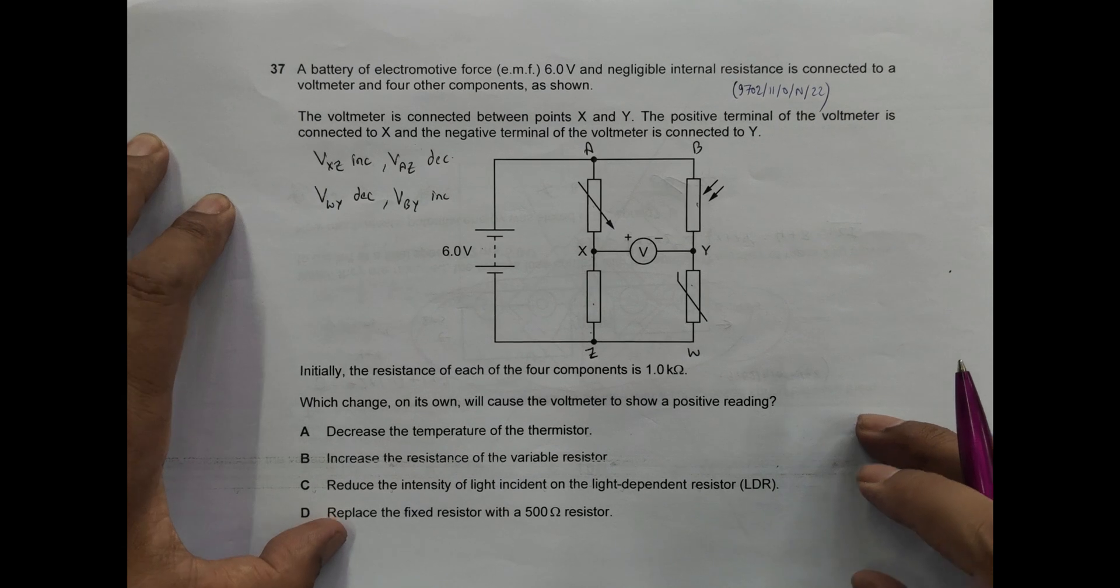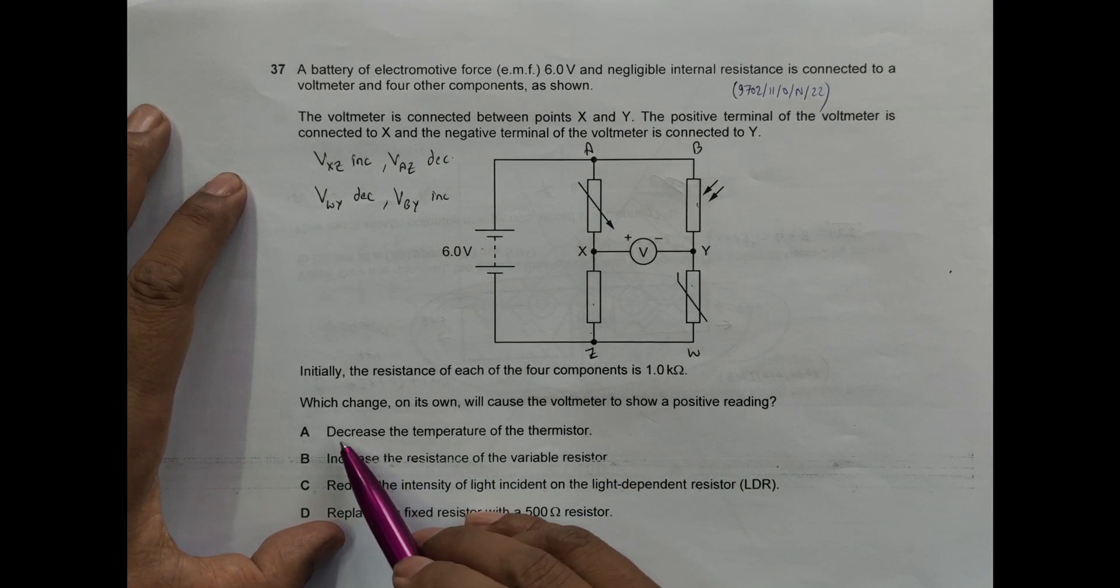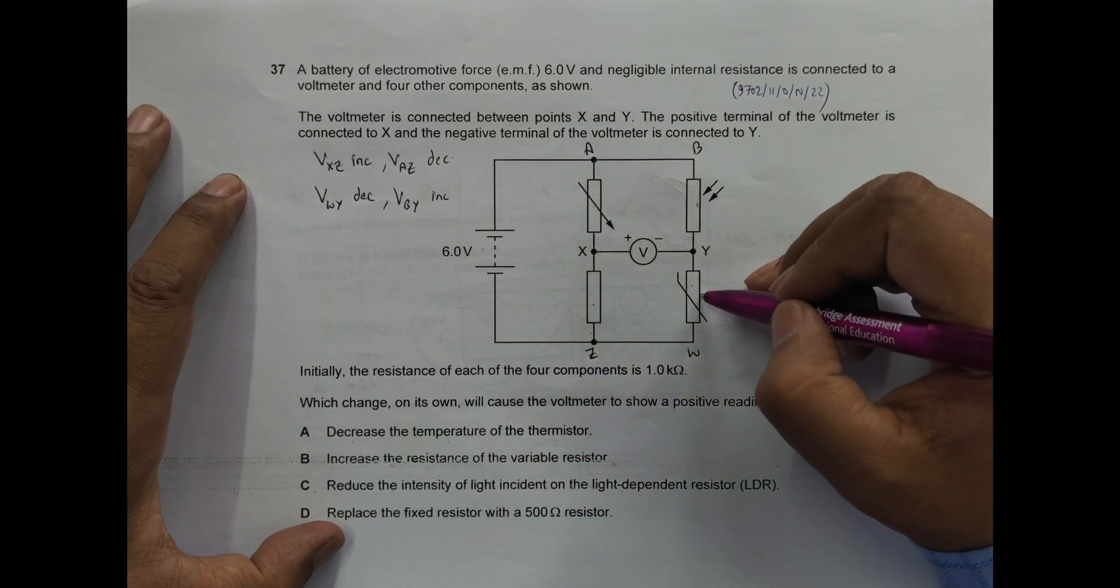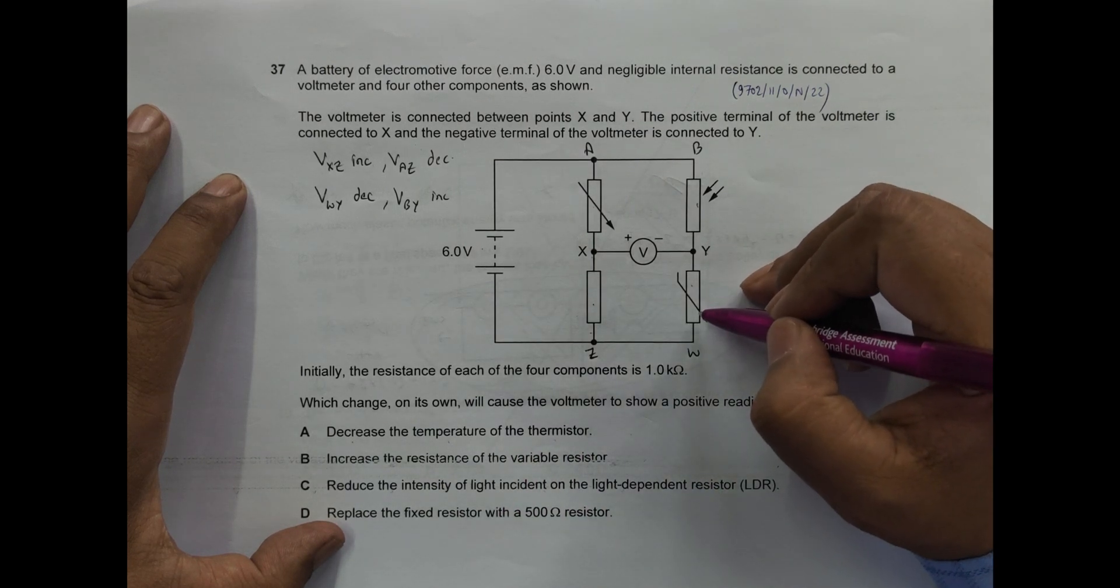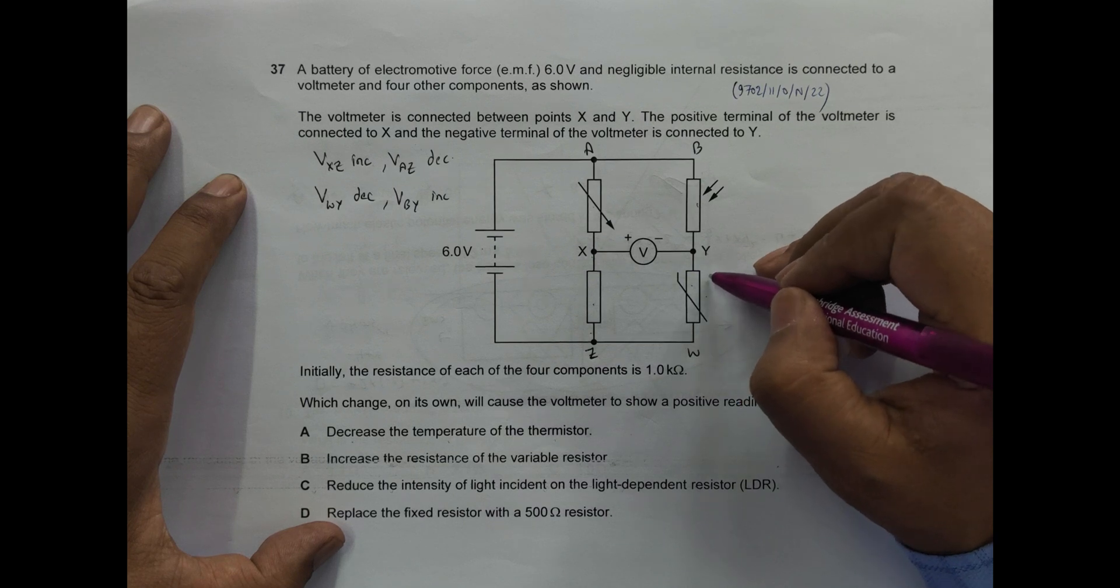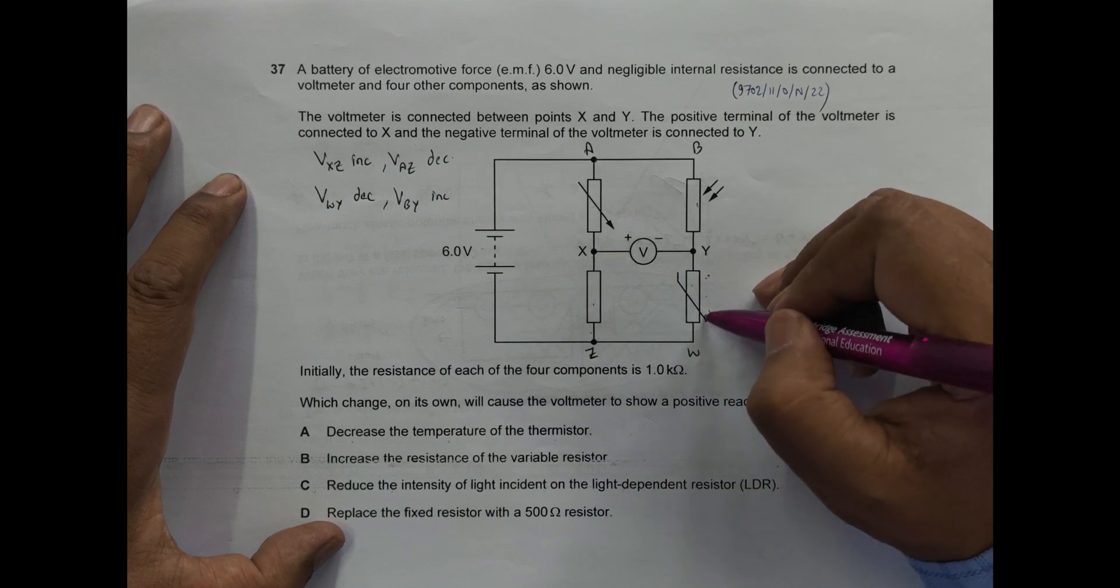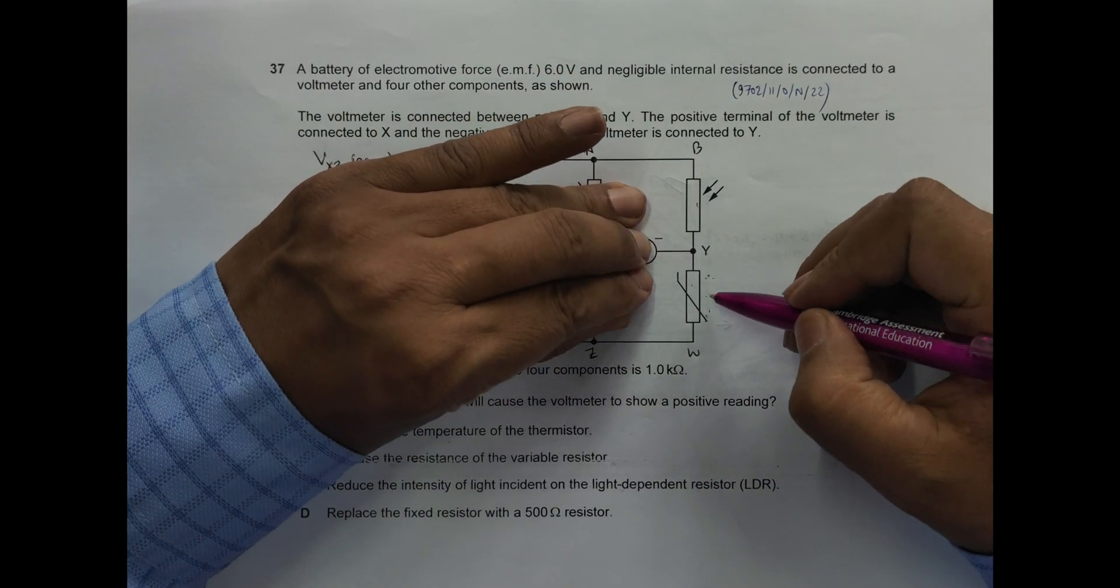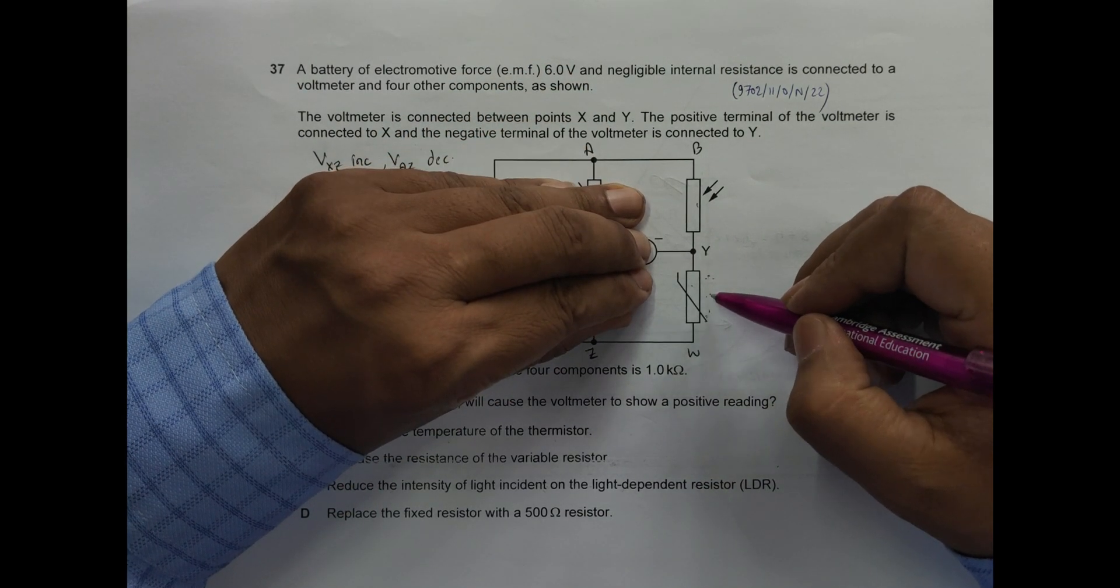Now let us go to the choices. What happens when we decrease the temperature of the thermistor? So this is the thermistor. If I decrease the temperature here, what happens? If temperature is decreased here, its resistance will increase.